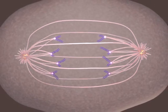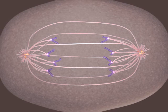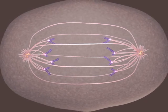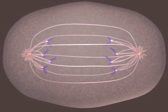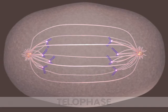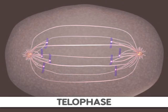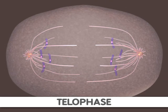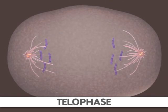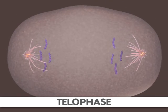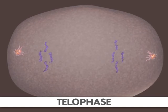Telophase is the final stage of mitosis. It is here the components of the new cells begin to appear. At this point, the spindle fibers are broken up. A new nuclear membrane surrounds the chromosomes at the end of each cell, and the chromosomes uncoil and return to an uncondensed state.